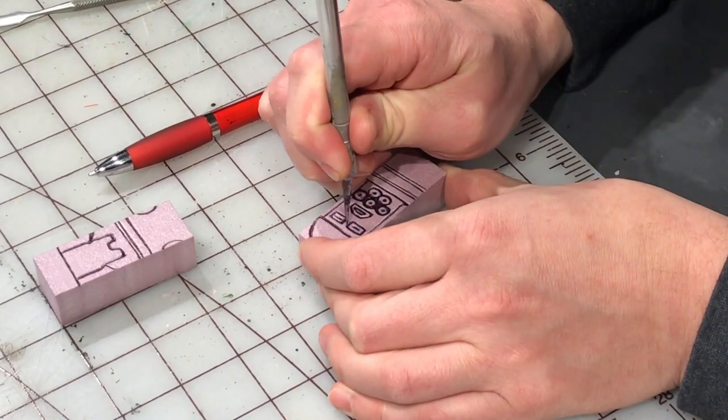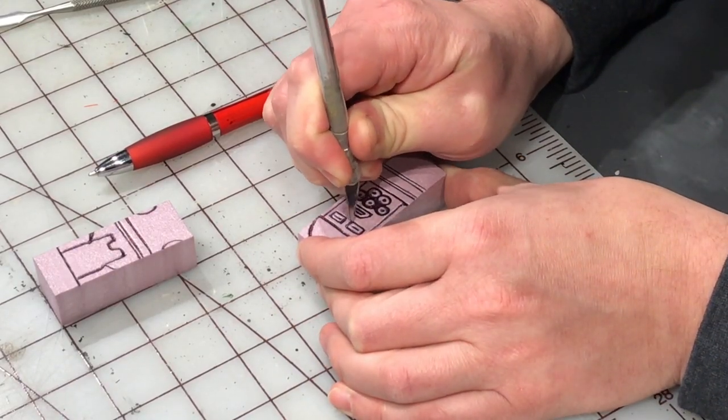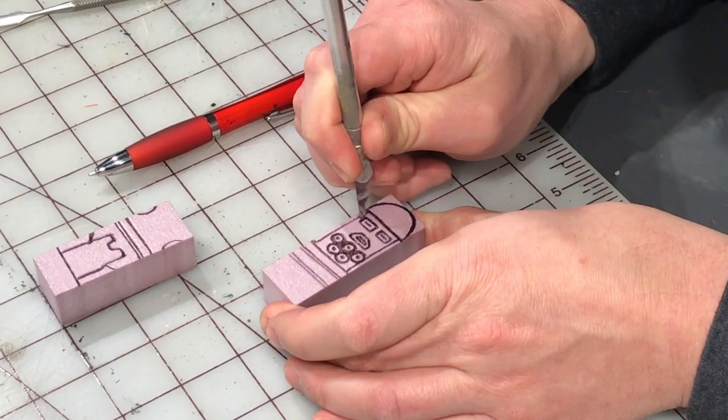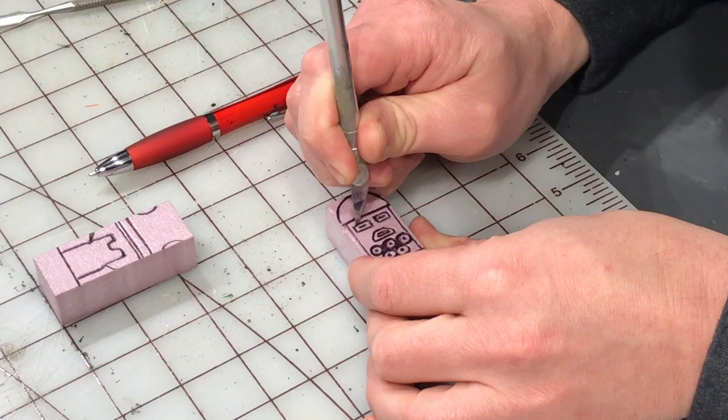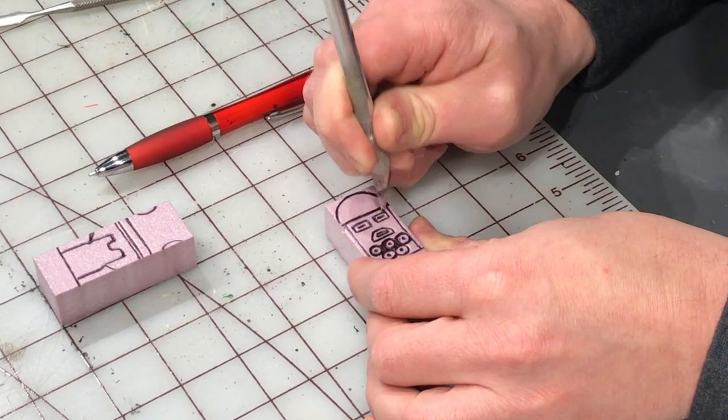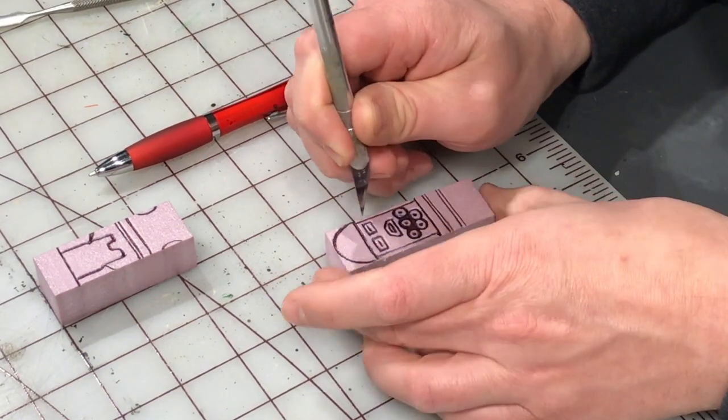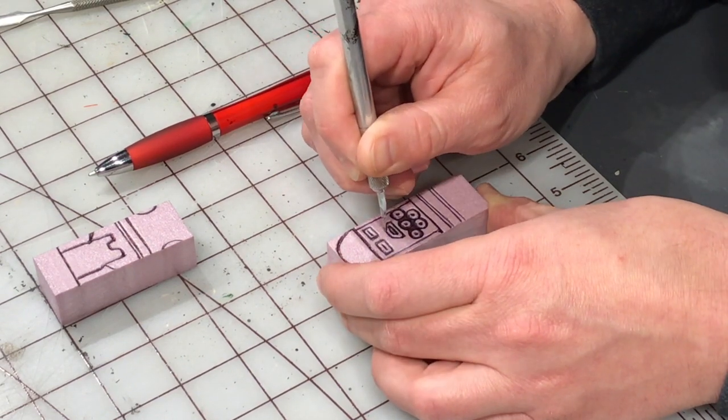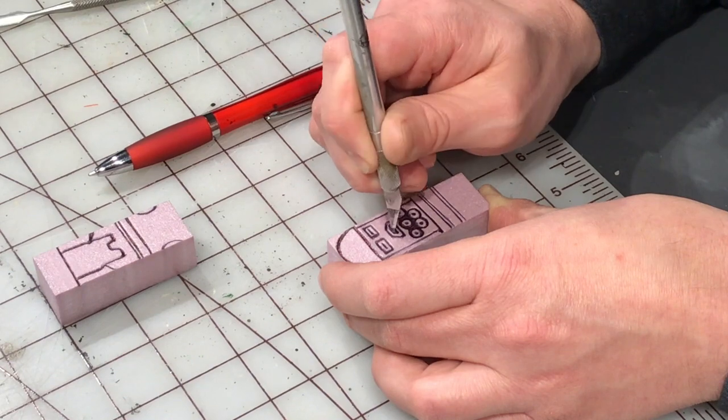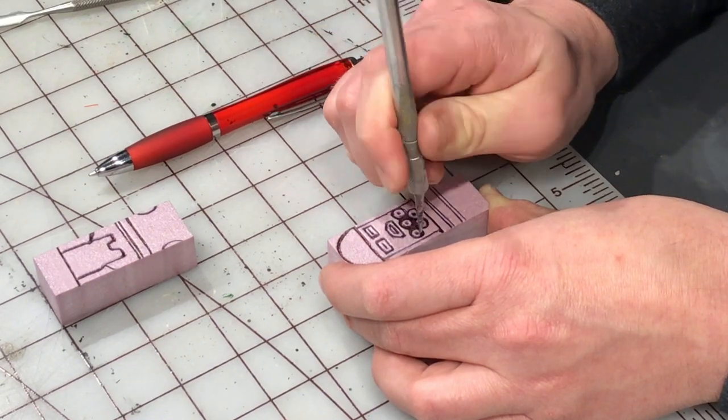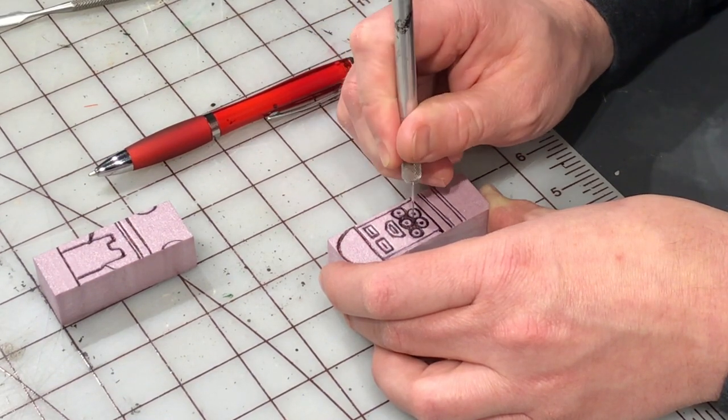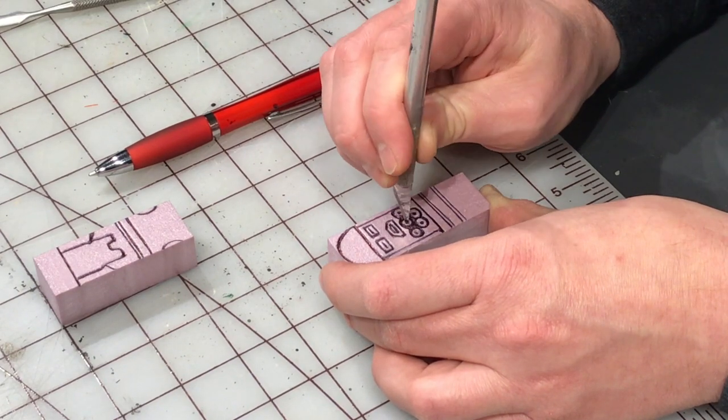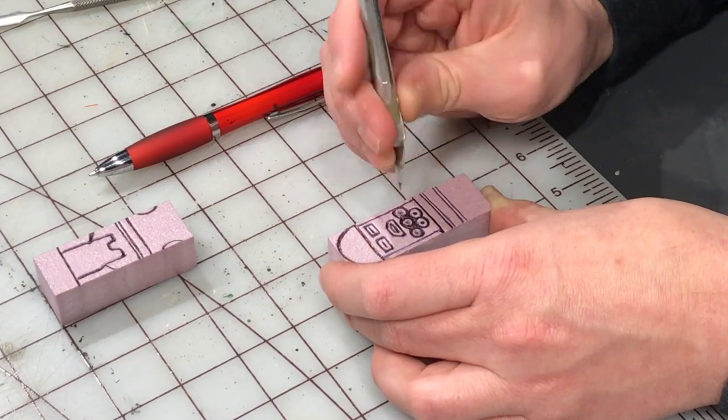Now with an exacto knife I'm just sawing in vertically around those pieces. I'm not trying to cut them out yet, I'm just making a slice in and around all of the details. We're going in about a sixteenth of an inch, probably the blade is ending up more like an eighth of an inch in, but it's just sawing in at that vertical angle perpendicular to the piece around all of the little detail elements.